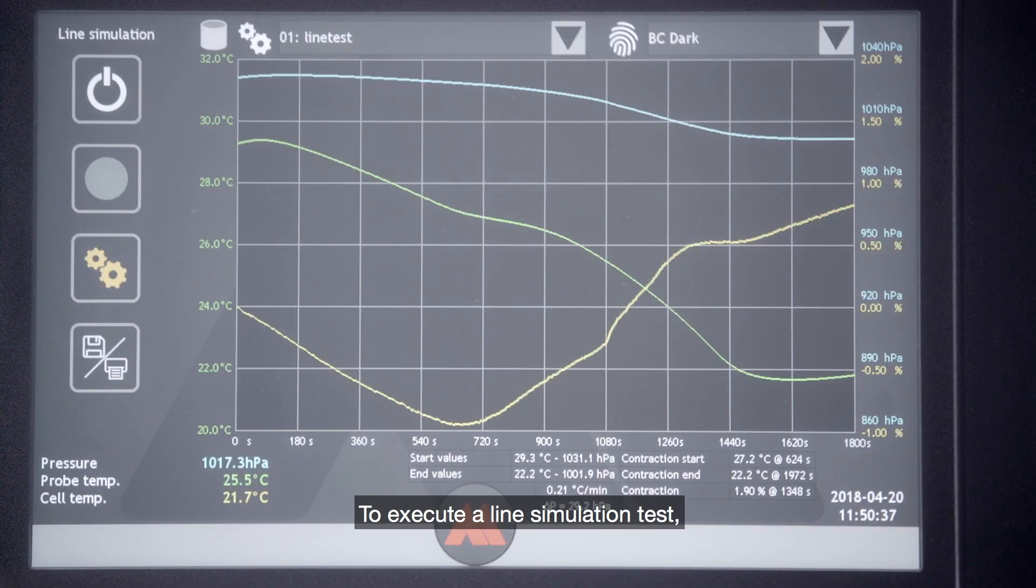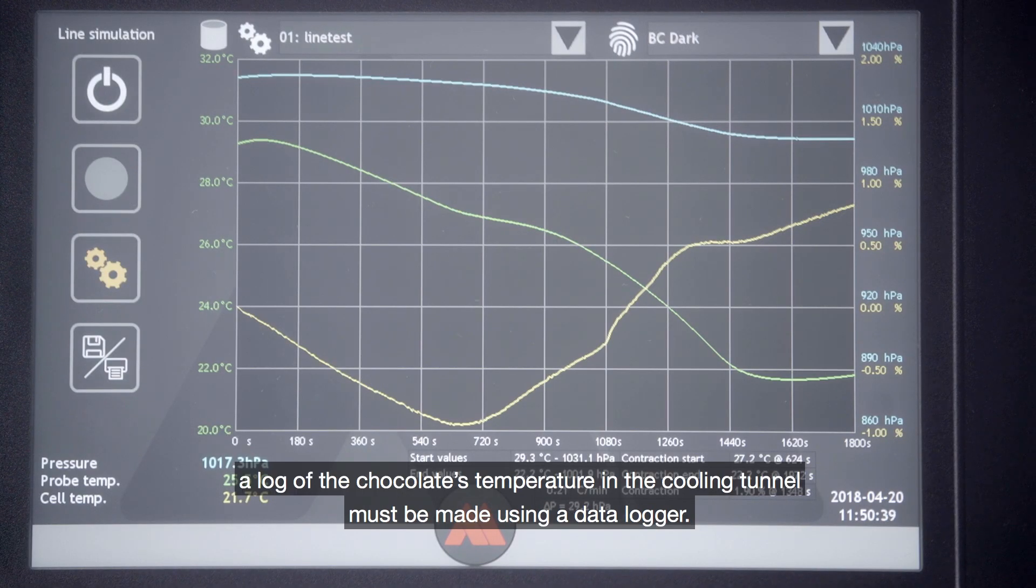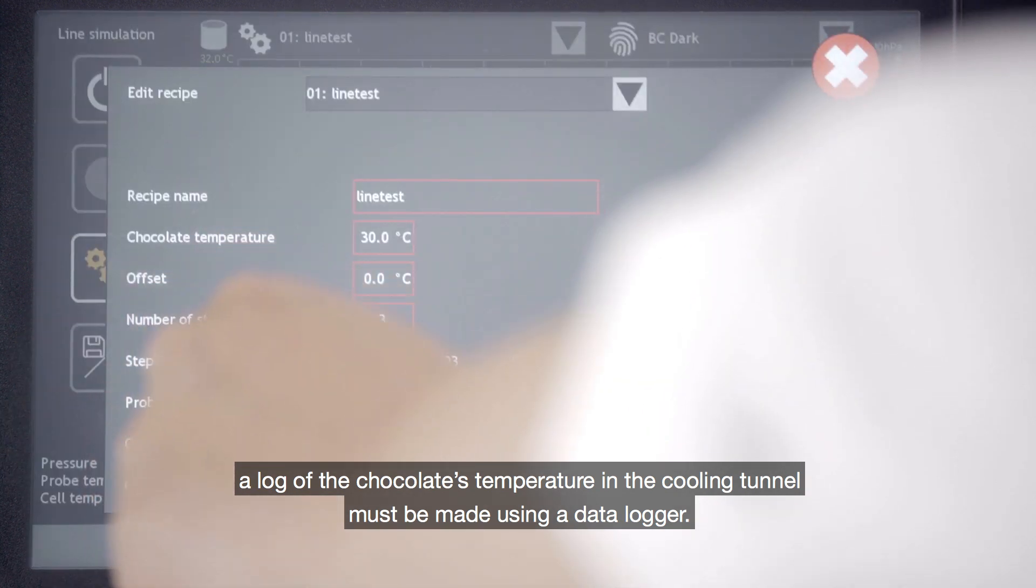To execute a line simulation test, a log of the chocolate's temperature in the cooling tunnel must be made using a data logger.